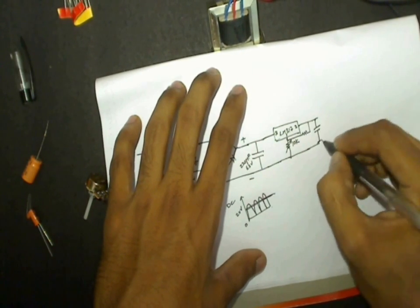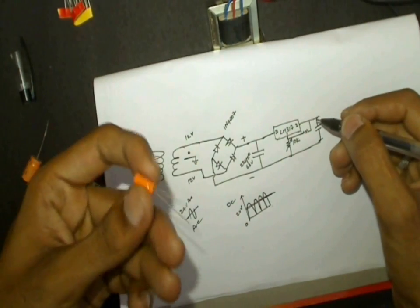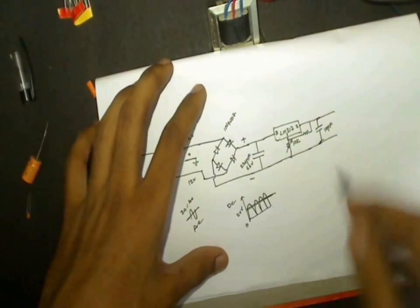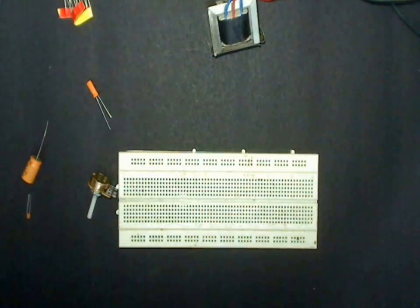I will also connect an extra capacitor at the output. This is a 10uF capacitor which will be used for extra filtering. Now let's build the circuit.